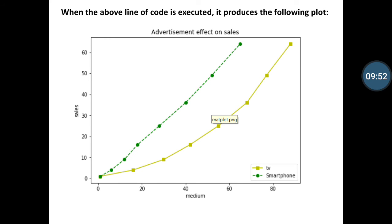Here yellow line represents the values of TV and green line represents the values of smartphone. And the title of the graph is defined here: 'Advertisement effects on sales'. And x-axis is defined as 'medium' and y-axis is defined as 'sales'. The graph is plotted as per the values defined in y and x variables in your code.